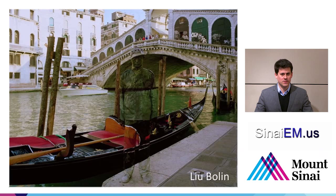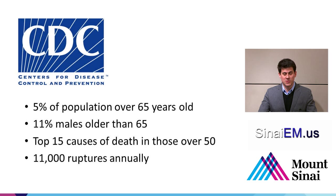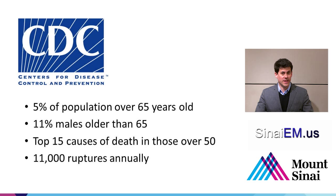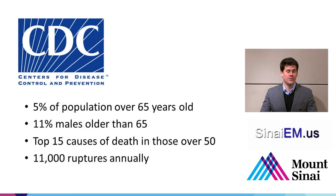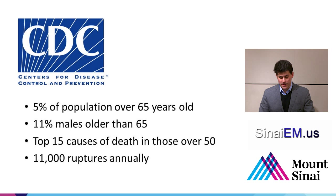How frequently do we see abdominal aneurysms? Five percent of the population over age 65 has an abdominal aneurysm, and it's double that rate in males — 11% of males over age 65. It's in the top 15 causes of death for patients over age 50, and 11,000 rupture annually. The mortality for a ruptured abdominal aneurysm approaches 90%; of patients who survive to the emergency department, about 50% die. Diagnosing these rapidly and getting patients to appropriate surgical care is critical.